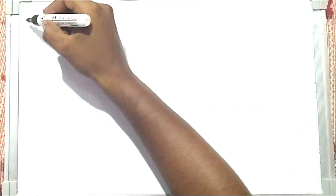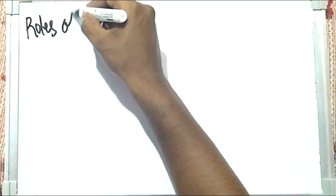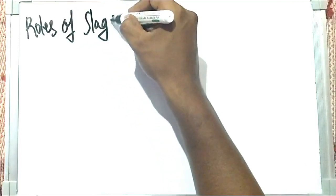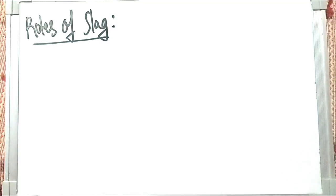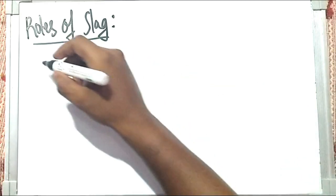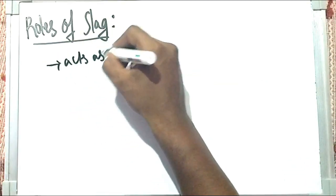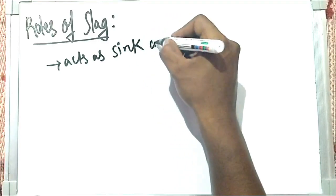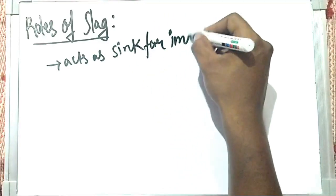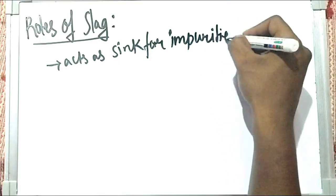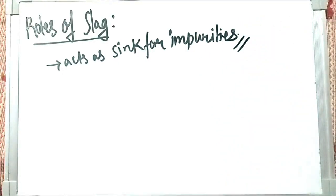Now we'll see what is the role of slag — good slag makes good steel. The first important role is it acts as a sink for impurities. All the impurities in the hot metal are converted into oxides or sulfides and go into the slag layer. So the slag should be an acceptor of these impurities in the form of oxides and sulfides — that is why it is known as a sink.